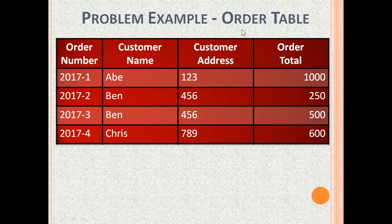This is the order table. Its columns are OrderNumber, CustomerName, CustomerAddress and OrderTotal. In this table, the only candidate key is OrderNumber, which is unique in every row. CustomerName and OrderTotal depend on the order number — for example, OrderNumber 2017-1 was placed by Abe and OrderTotal was $1,000. However, CustomerAddress does not depend on the order number; CustomerAddress depends on CustomerName.